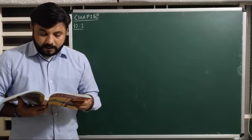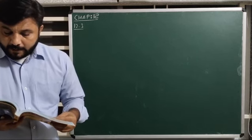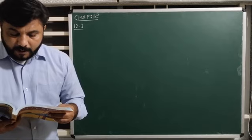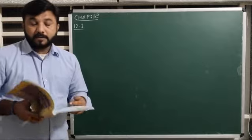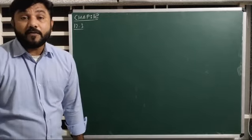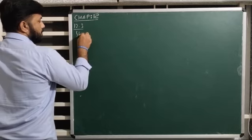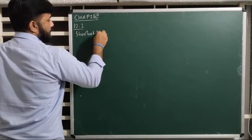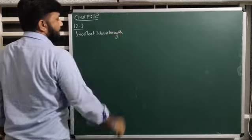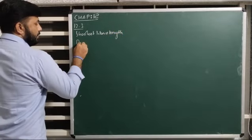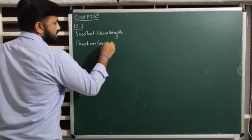Let us see: what is the shortest wavelength present in the Paschen series of spectral lines? What is given? Shortest wavelength means shortest wavelength. We will see, as it is given, Paschen series.